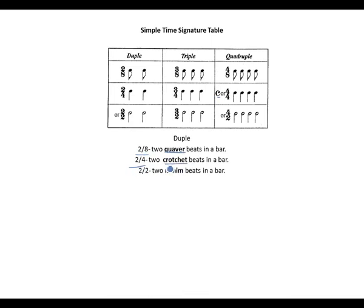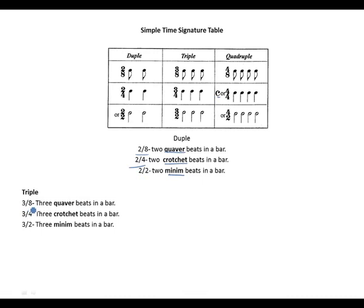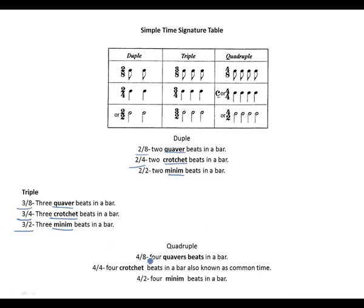To summarize: two-eight means two quavers; two-four means two crotchet beats; two-two means two minim beats — all duple. For triple: three-eight means three quavers; three-four means three crotchets; three-two means three minim beats. For quadruple: four-eight means four quaver beats; four-four means four crotchet beats, also known as common time — look at the common time sign; and four-two means four minim beats in a bar.